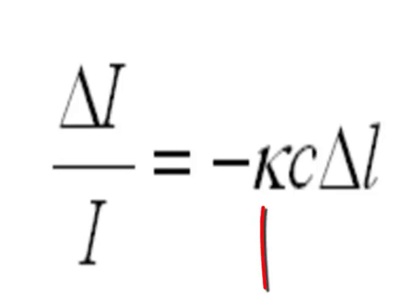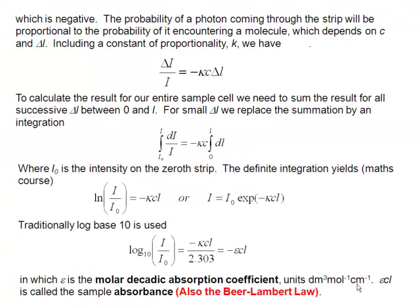And so we put a constant of proportionality in there, which I'm calling kappa. And since the way we've defined delta I, delta I is always negative, then that's where the negative sign comes from.